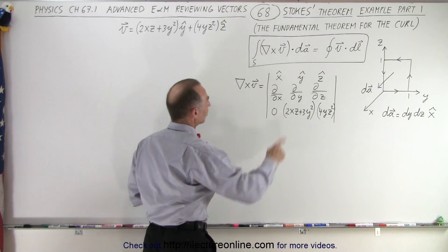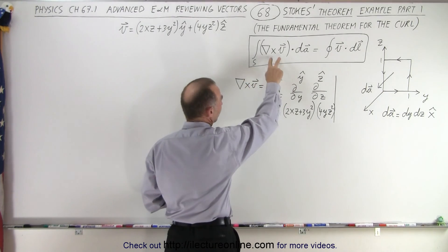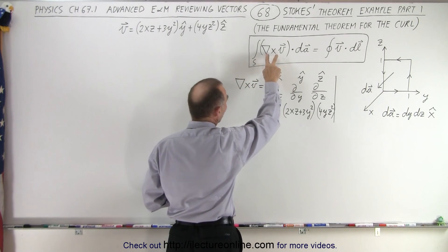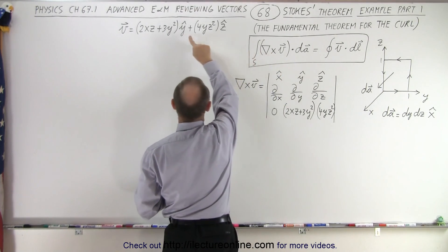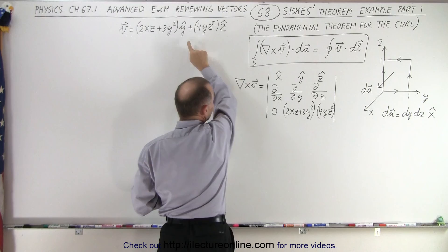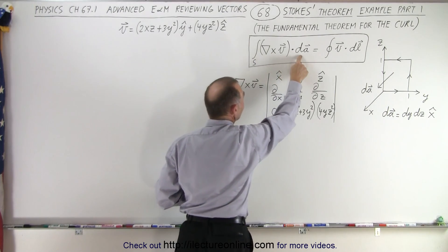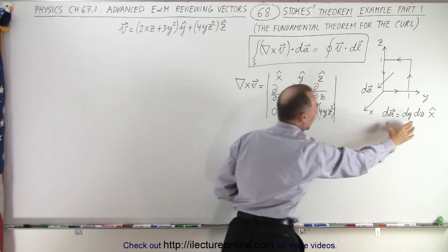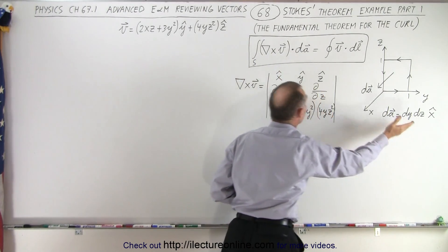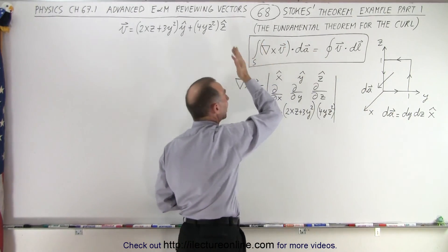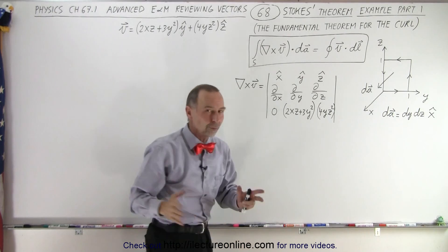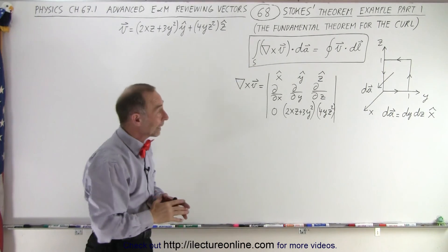On the left side we first need to take the curl of our vector, then multiply times dA — which is defined right here — and then integrate it over the surface, which means a double integral.